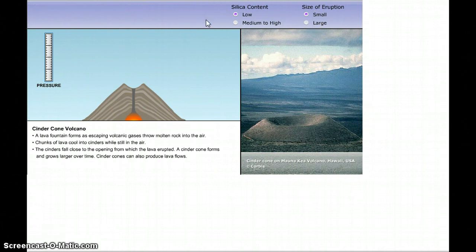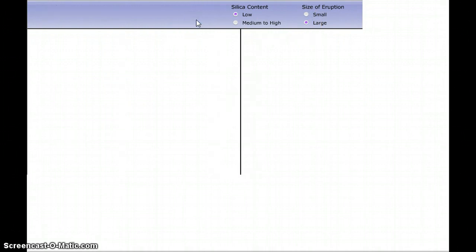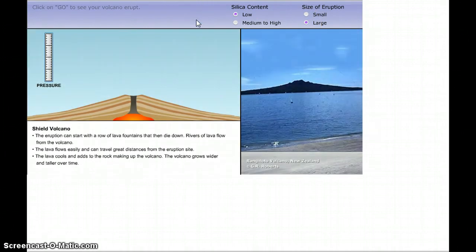Let's look at a low silica large eruption and what kind of volcano is created here. Now this is called a shield volcano. A little bit more pressure shoots up but since it's low silica it's just going to run off the sides and this is going to make layer after layer after layer and you make this really wide, not very tall volcano like that.